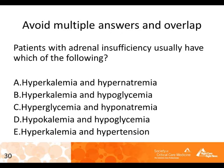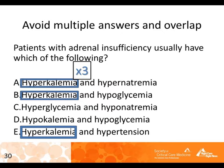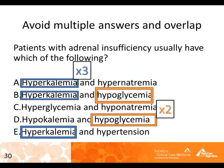Another issue to avoid: multiple answers and overlap. When each answer choice has two parts, test prep courses teach you to count up the occurrence of each term across all answers. In this example, hyperkalemia shows up three times, hypoglycemia twice, the rest only once. Whichever terms appear most often tend to be in the correct answer — in this case choice B, the correct answer. We didn't need to know anything about the topic to get it right.